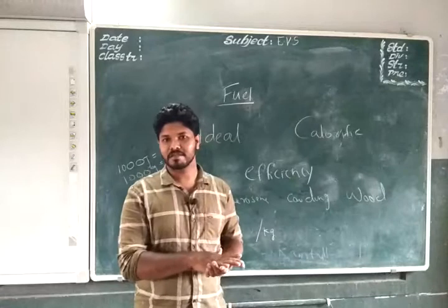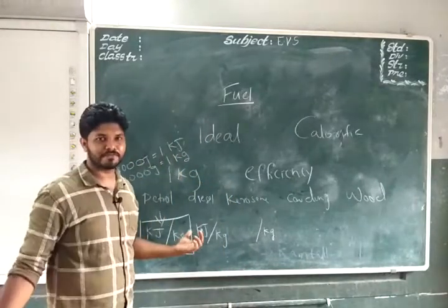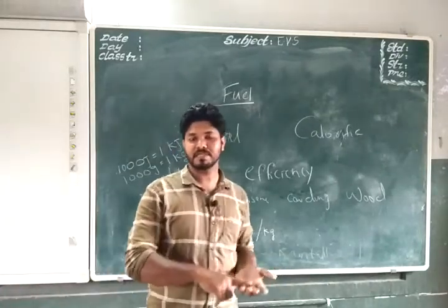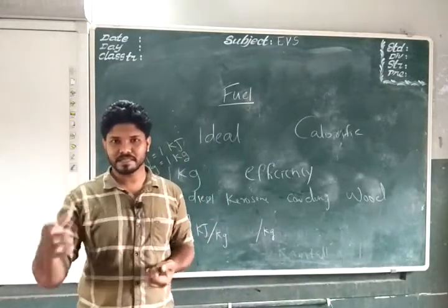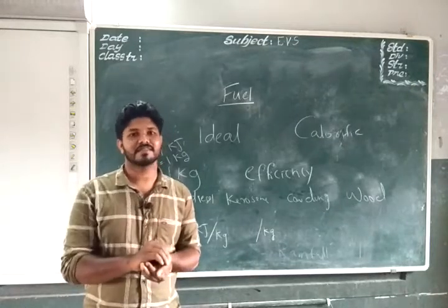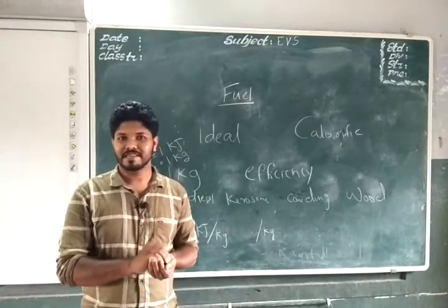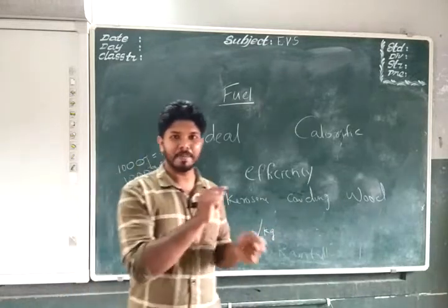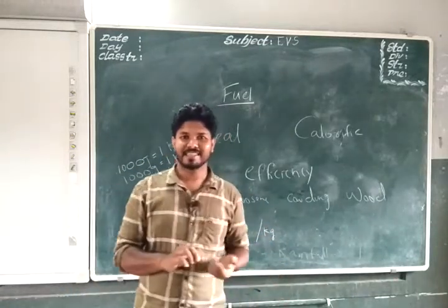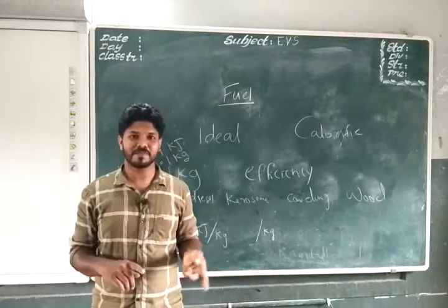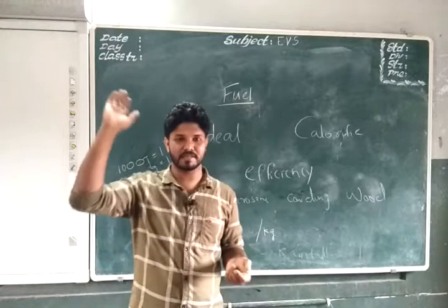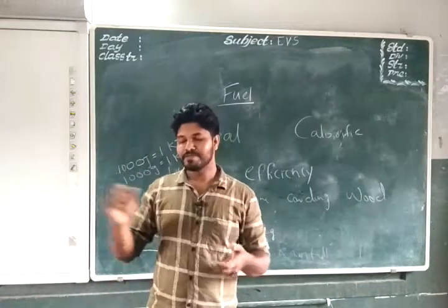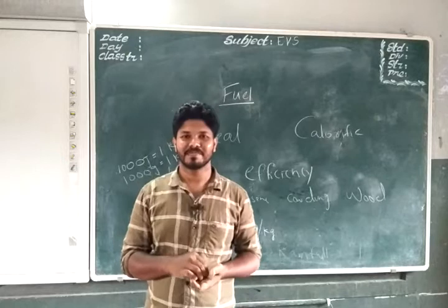One kilogram of hydrogen produces 1,50,000 kilojoule of energy, while one kilogram of wood produces only 17,000 kilojoule. So we need only a very little hydrogen compared to a lot of wood to produce the same amount of heat. That is why hydrogen is used mostly in space vehicles — it requires less quantity and produces a lot of heat, making it the most efficient fuel in the table.